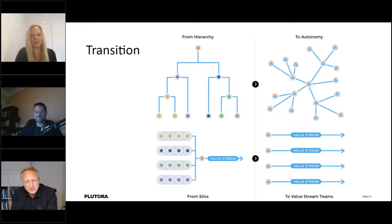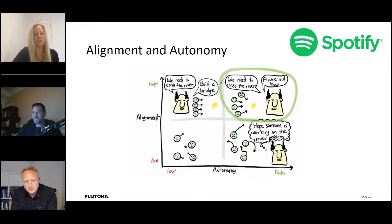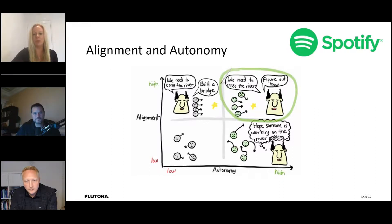Looking at the Spotify model — I know it's popular to discredit Spotify a little these days, but they still produce some very wise words and are doubtlessly a very successful company. This chart starts out as a straight line where alignment and autonomy seem opposite or in tension. But then they draw it more like a chart with the realization that we can actually balance alignment and autonomy. How do we balance them? What are the practical activities that leaders can do when moving teams toward more autonomy?